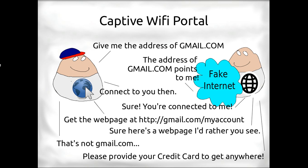The captive portal tells your browser that the address of gmail.com is itself — the captive Wi-Fi portal. Your browser, knowing no better, simply connects to the captive portal. When you request a web page, you won't get the web page you wanted — you'll get whatever web page the captive portal wants to give you. Often they ask for your credit card info, but in our case, instead of credit card info, we're going to give the users an instrument to play with instead, which is probably better than overpriced Wi-Fi.